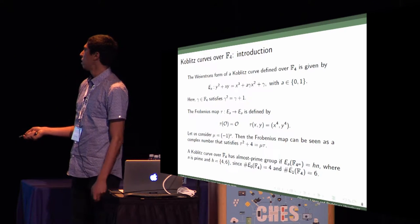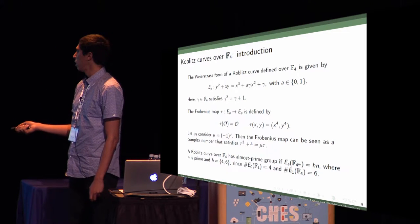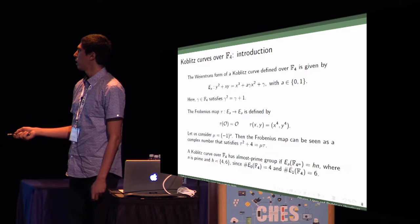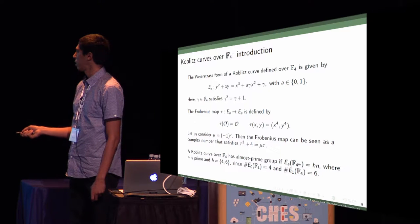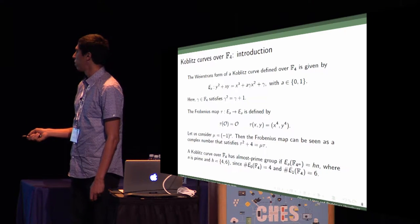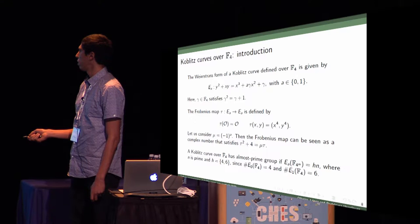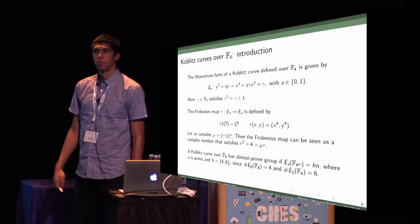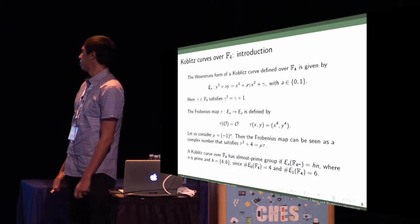We can also represent this scalar in the zeta tau polynomial ring. And it can have an almost prime group. Now H, we can have a group of this form where H equals 0, 4, or 6 depending on parameter A, and N can be prime.